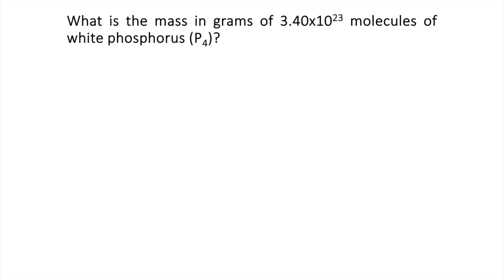What is the mass in grams of 3.40 times 10 to the 23 molecules of white phosphorus? In this problem, we are given 3.40 times 10 to the 23 molecules.